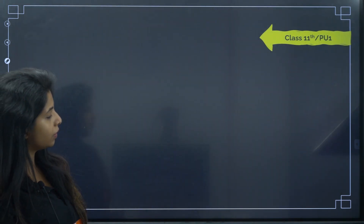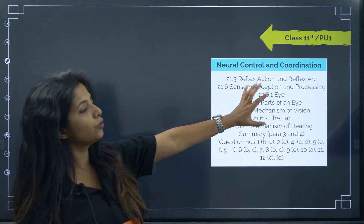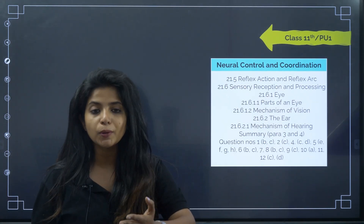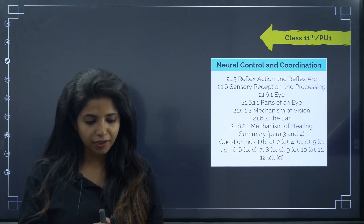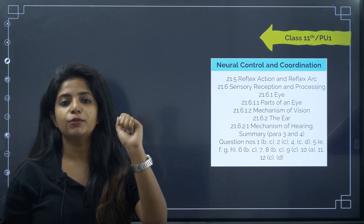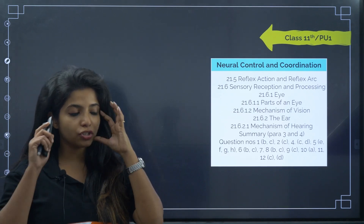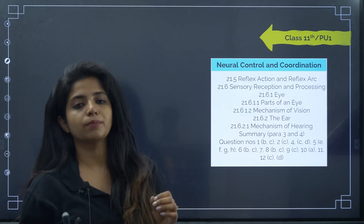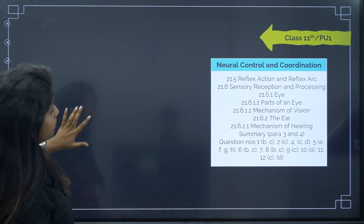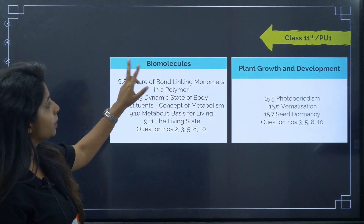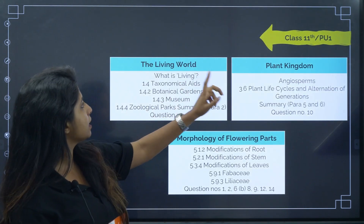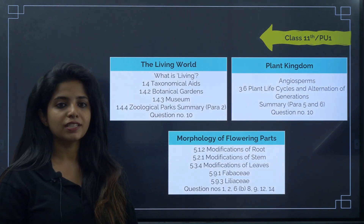'Neural Control and Coordination' also has a large set of deleted content. If you're lazy about reading the PDF, at least note down the chapter names so when they come up you know whether it's fully covered or partially deleted. Chapters with partial deletions include: plant growth and development, biomolecules, structural organization in animals, anatomy of flowering plants, plant kingdom, the living world, and morphology of flowering plants.